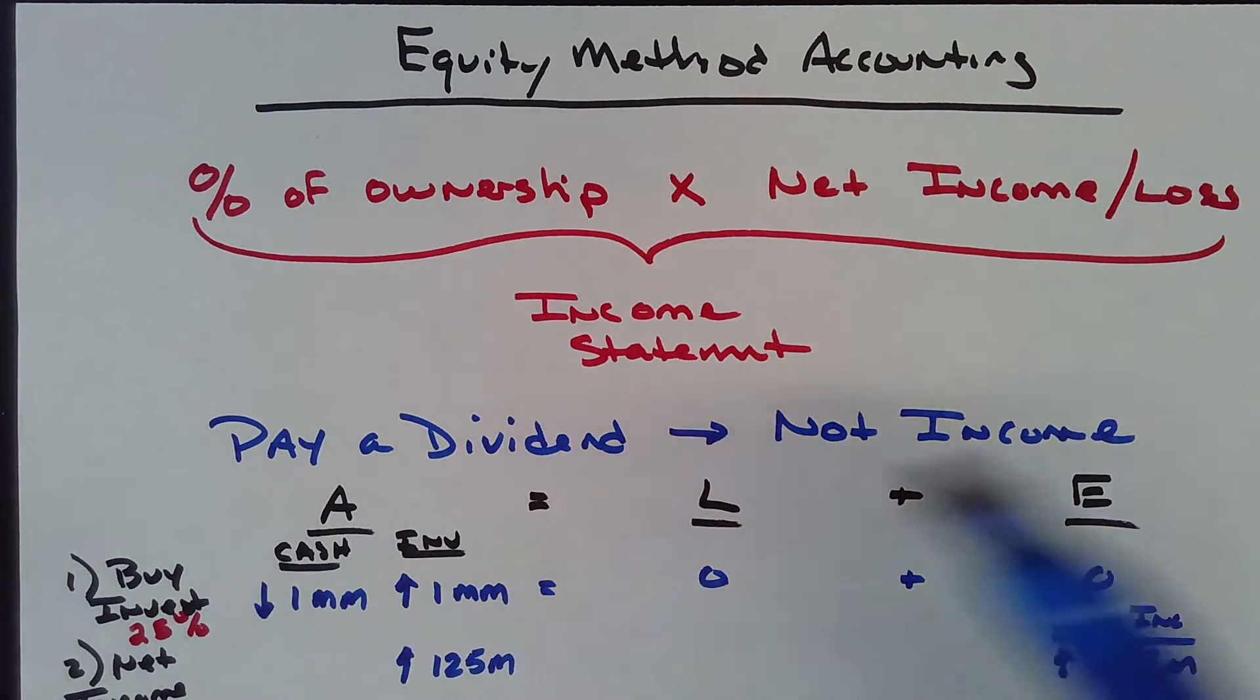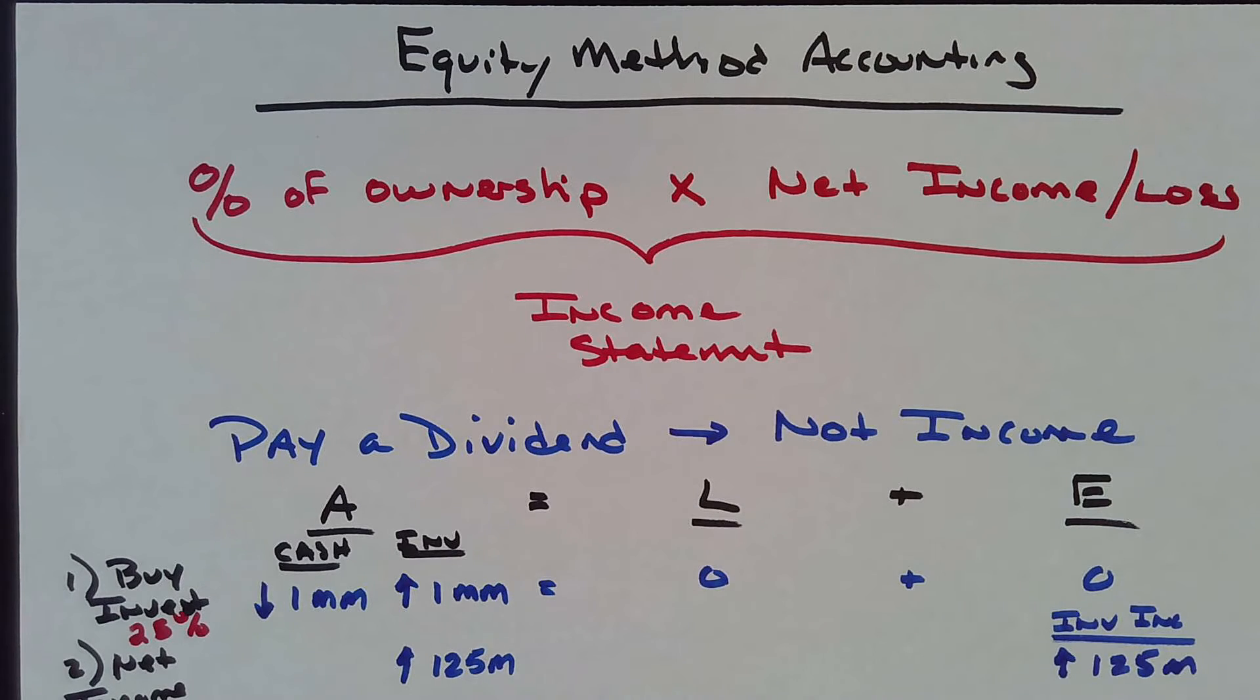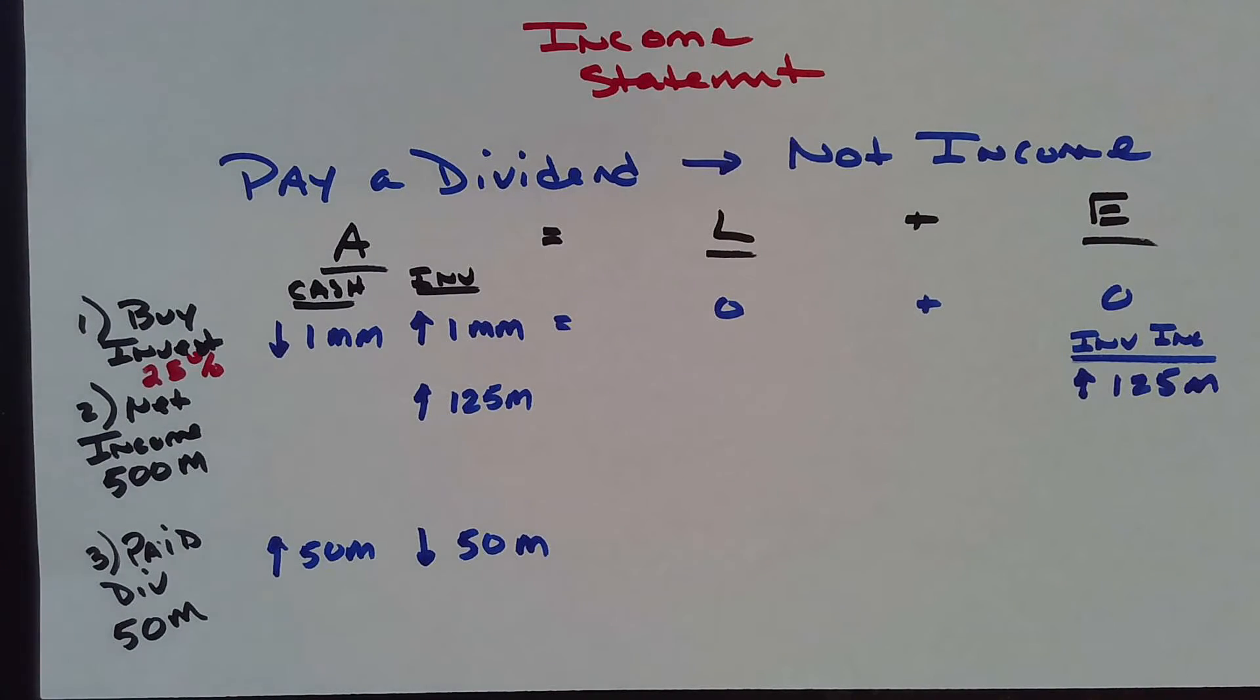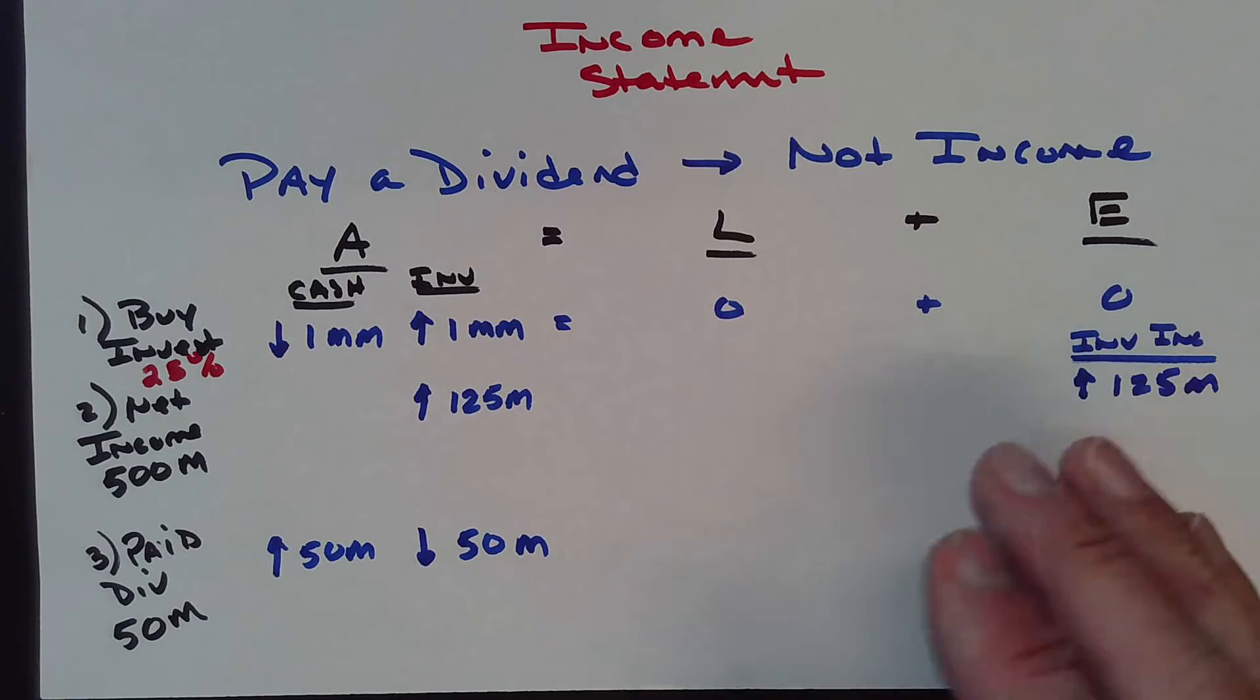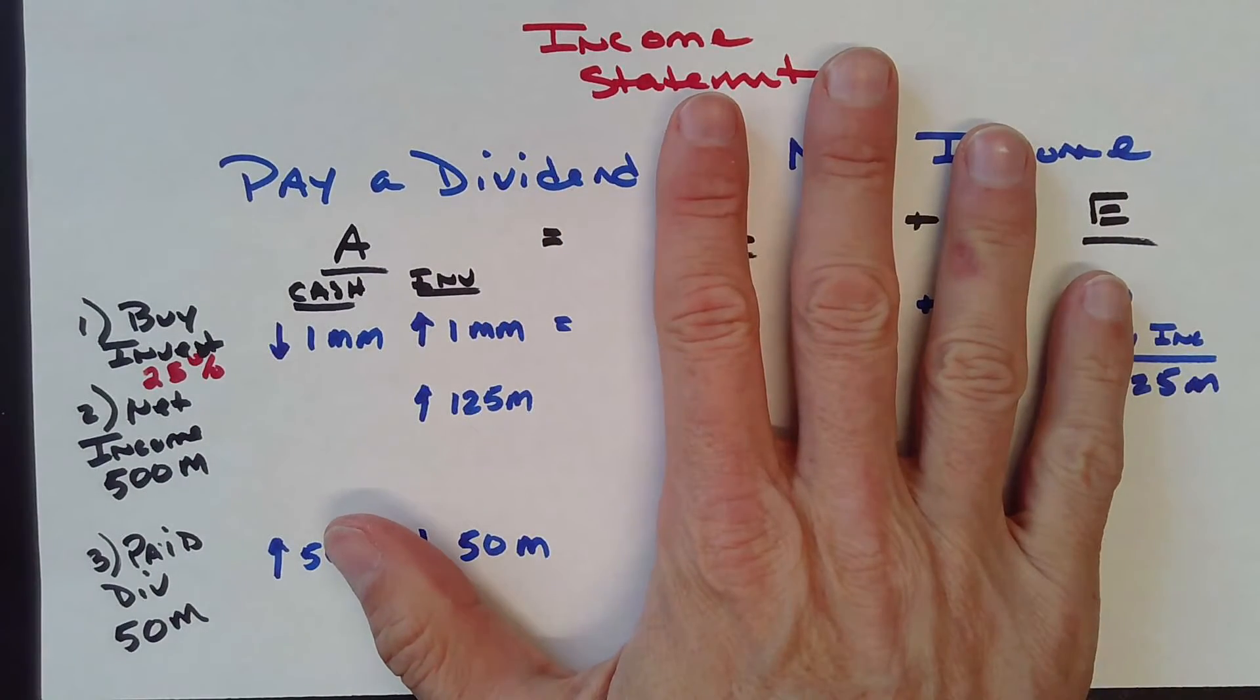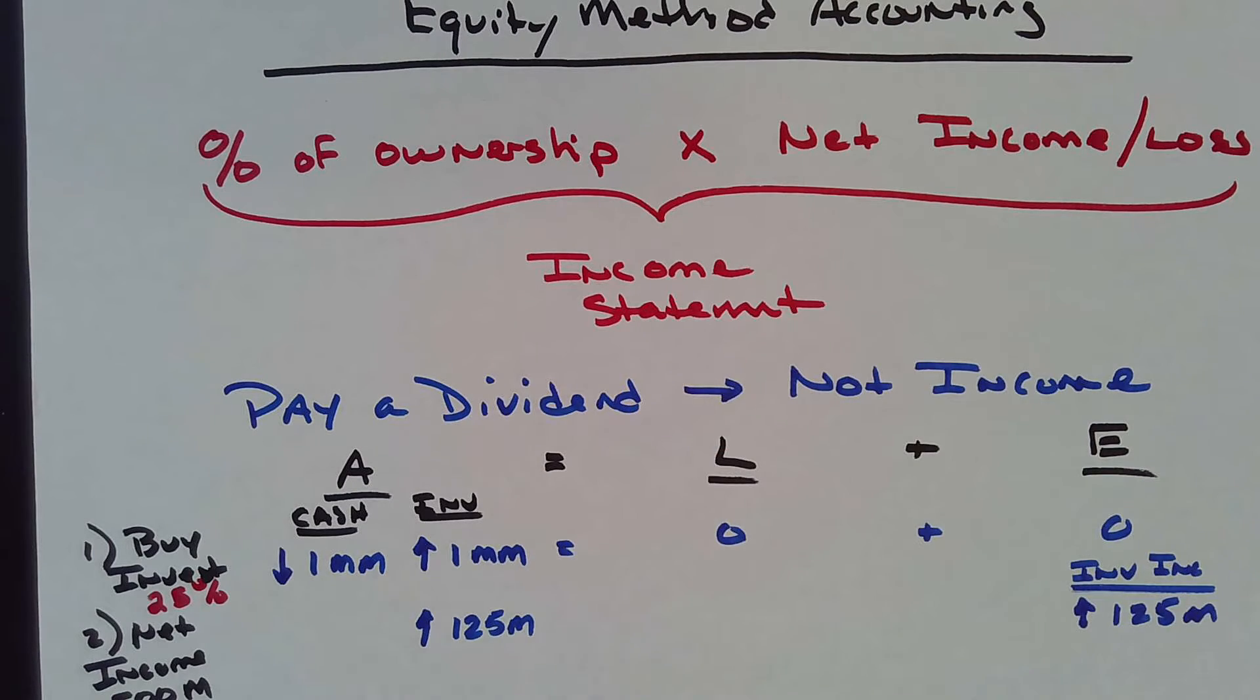This is equity method accounting. This is when you have more than 20 percent or less than 20 percent but with significant influence. This is just for equity securities. The last piece is what happens if you own greater than 50 percent.